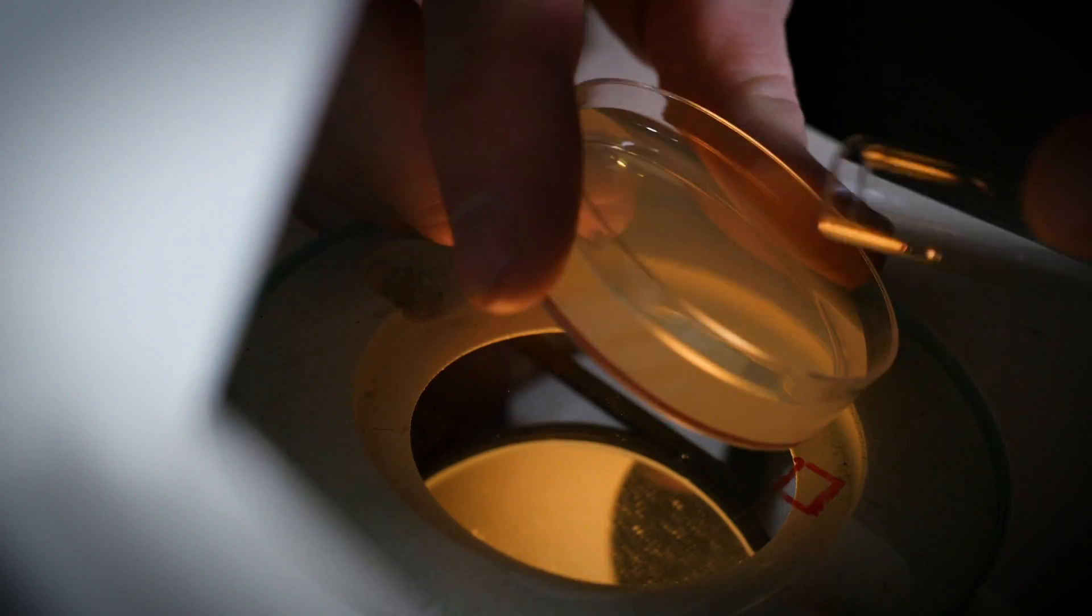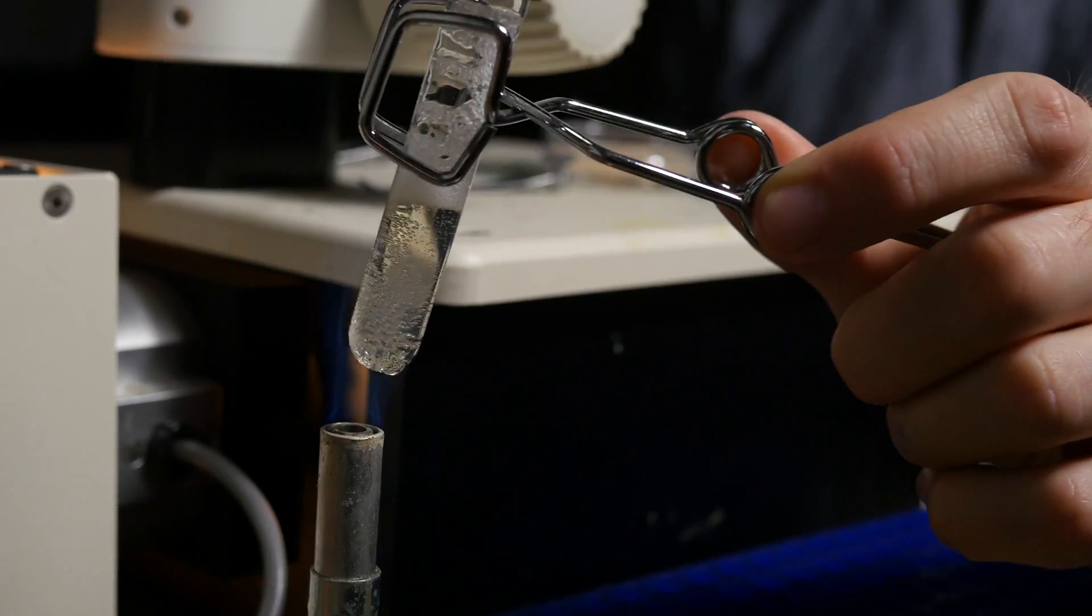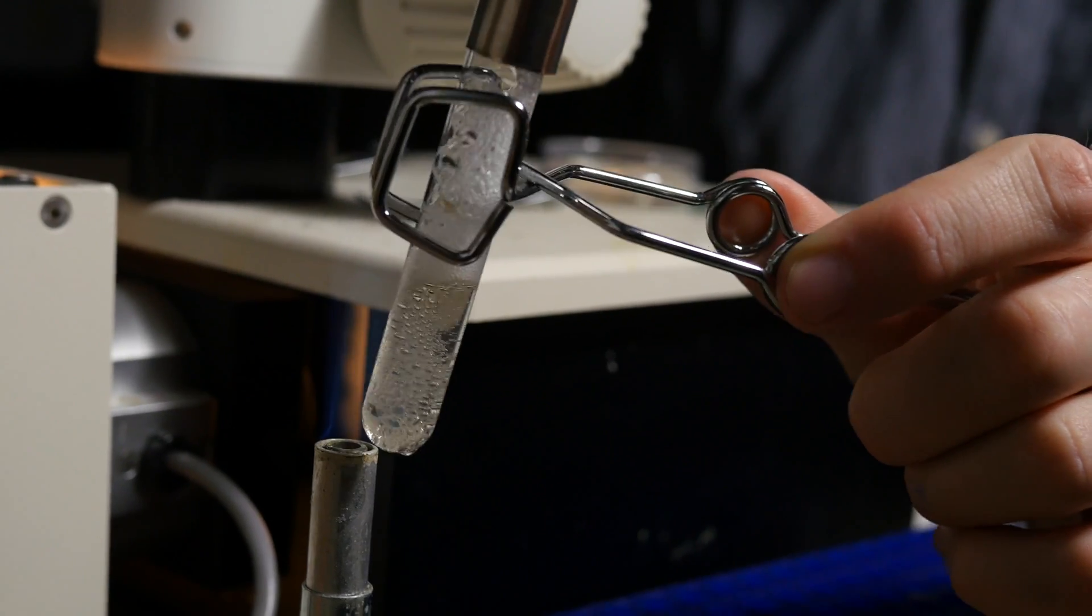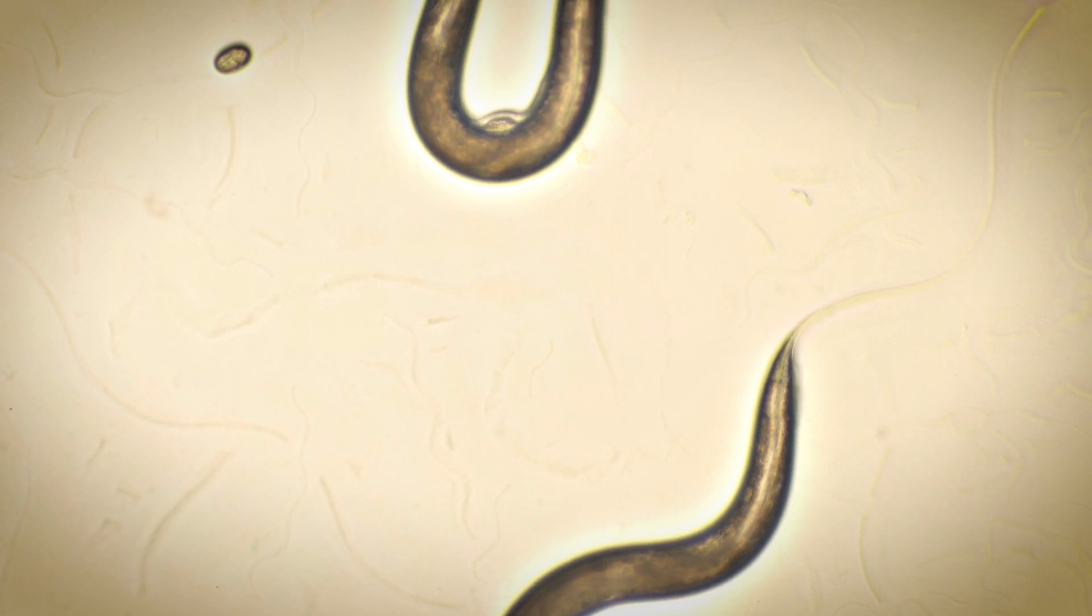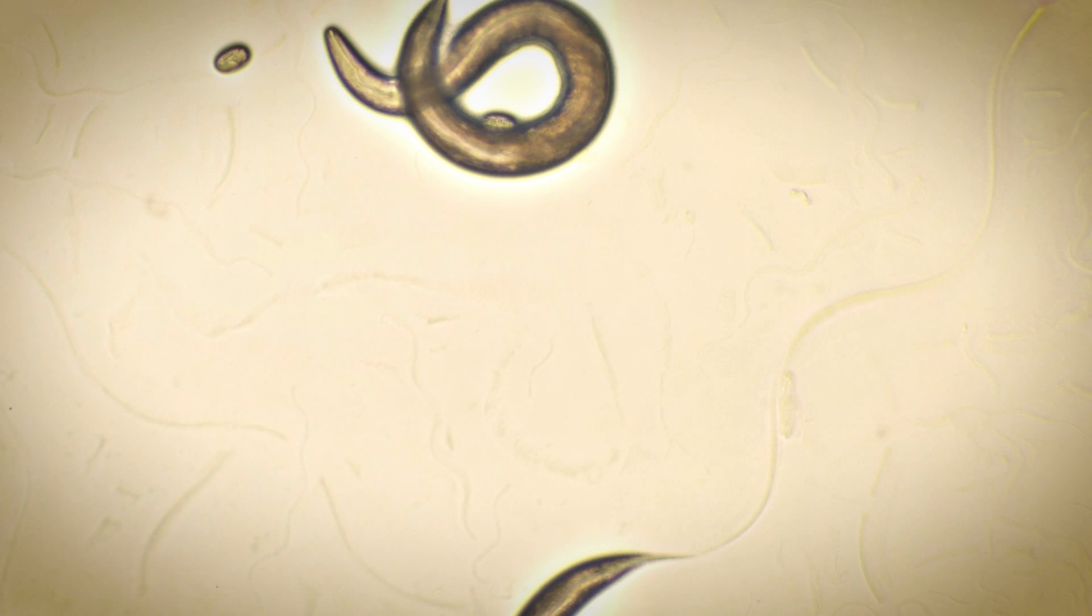How the nervous system works is one of the big mysteries in biology and neuroscience. The worm can be really powerful because it's transparent and easy to work with experimentally. It has only 302 neurons, which lets us assign the neural substrates for these different aspects of animal behavior that we study.